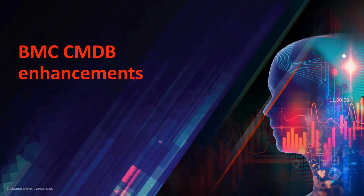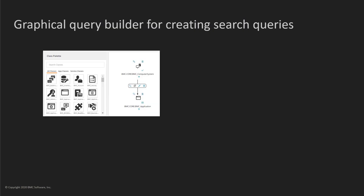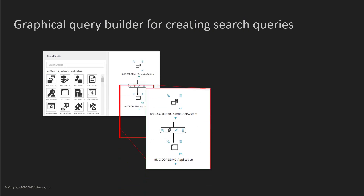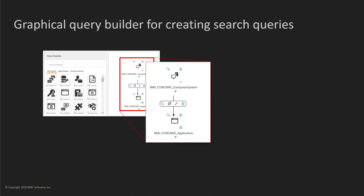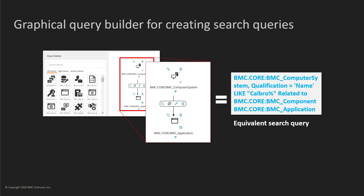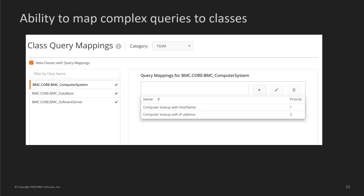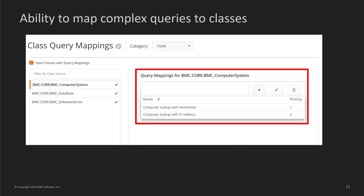In BMC CMDB, configuration managers can create a search query by dragging and dropping classes on the canvas and creating relationships between these classes. You can map a predefined complex query to a class on the Class Query Mappings page, and use these complex queries as part of the process to automatically associate a CI to an incident.